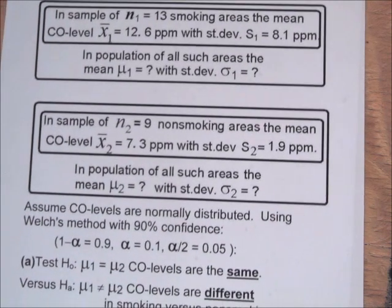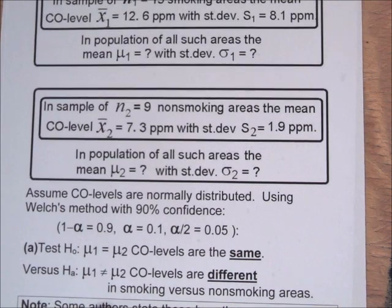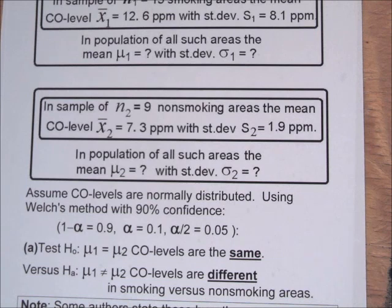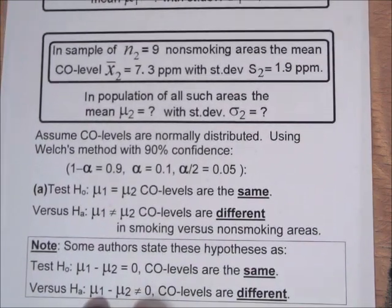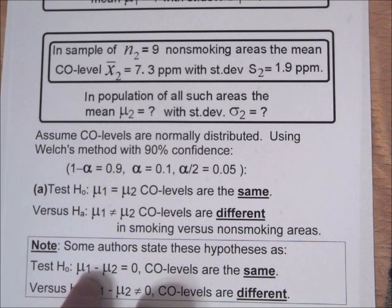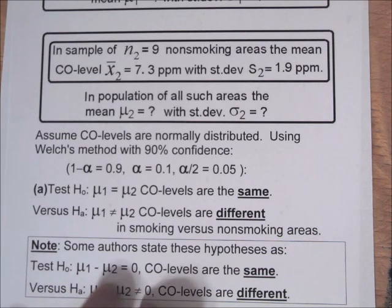We're going to assume that the carbon monoxide levels are normally distributed and use Welch's method with 90% confidence. We want to test H0: mu1 equals mu2 — carbon monoxide levels are the same — versus HA: mu1 not equal to mu2 — carbon monoxide levels are different in smoking versus non-smoking areas. Some authors state these as H0: mu1 minus mu2 equals 0 versus HA: mu1 minus mu2 not equal to 0.